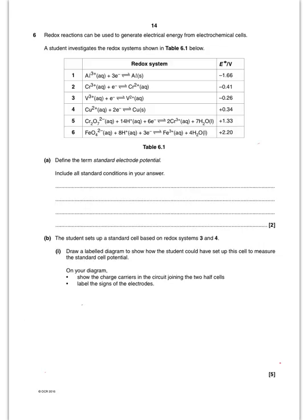They want me to define oxidizing agent and reducing agent. An oxidizing agent accepts electrons and increases the oxidation number of another species. A reducing agent donates electrons and decreases the oxidation number of another species. They then want me to use Cr³⁺ from the redox systems to illustrate these definitions.